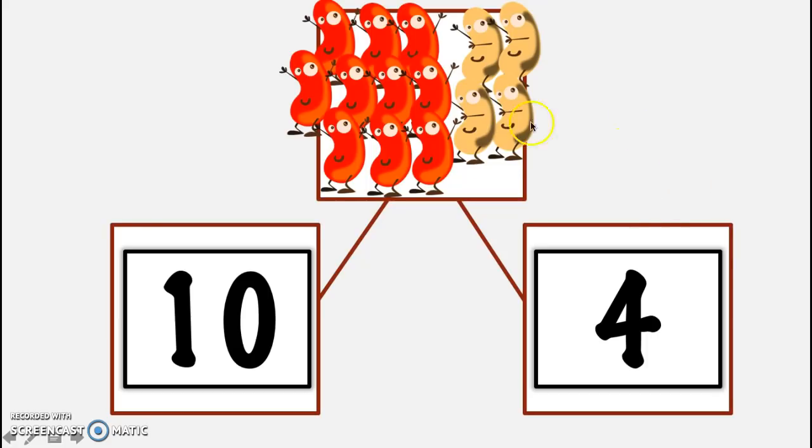All right. So, it matches our picture, but it also matches what we said about saying things the say 10 way. How did I get a 10 and a 4 down here? Yeah, those were the parts of the whole amount. There were 14 beans all together, 10 were red, and 4 were white.